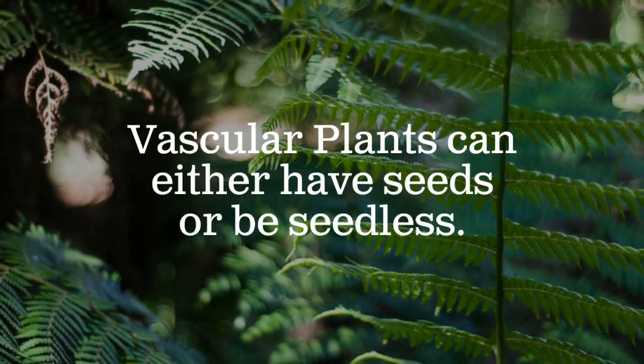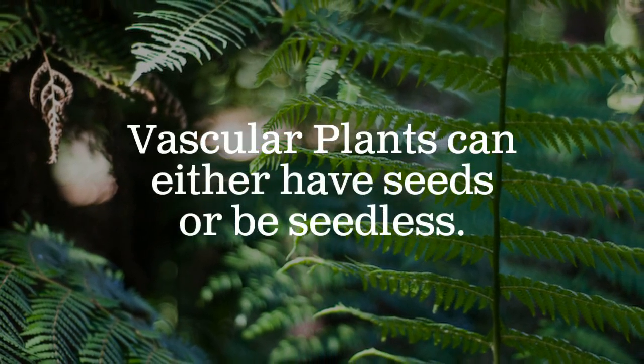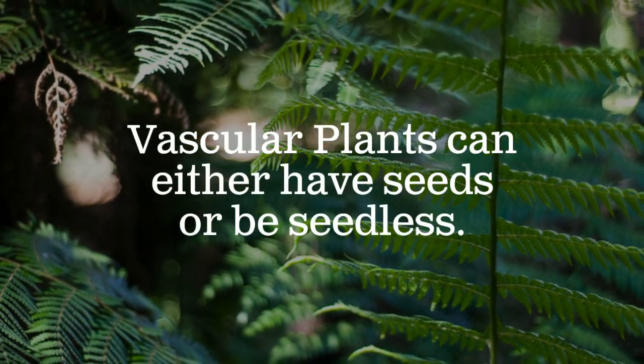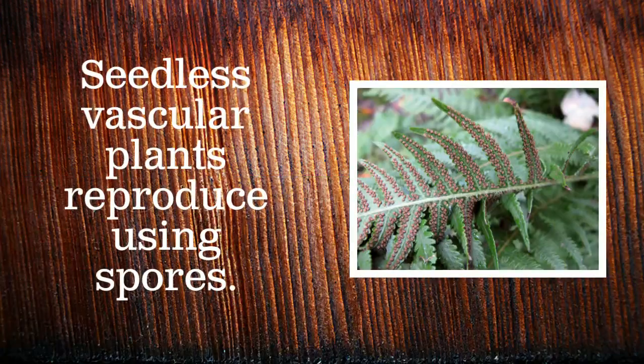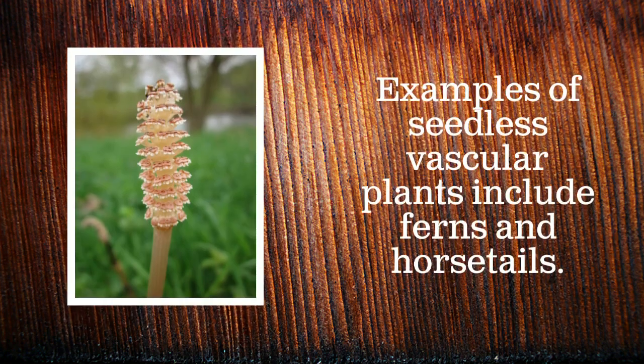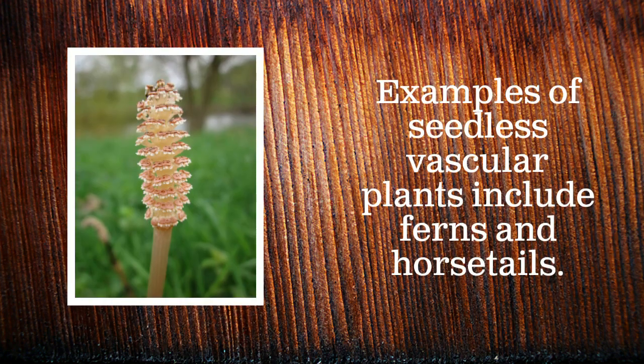Vascular plants can either have seeds or be seedless. Seedless vascular plants reproduce using spores instead of seeds. Spores are much smaller. Examples of seedless vascular plants include ferns and horsetails.